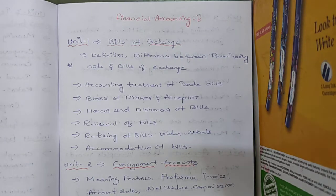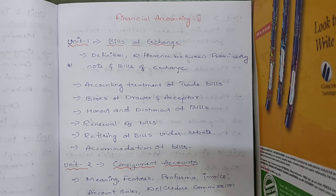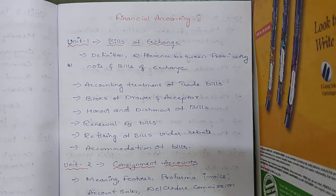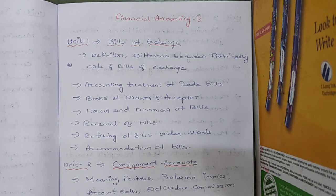Hi students, this is Financial Accounting 2 for BCom General and Computer Applications, Semester 2. Financial Accounting 1 is in your first semester and Financial Accounting 2 is in your second semester. Today we are going to discuss the units — how many units we have and what topics are covered in those units.